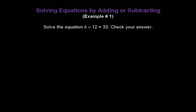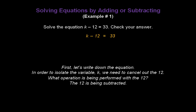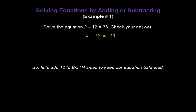Let's solve this equation: k minus 12 equals 33, and check our answer. First, write down the equation k minus 12 equals 33. In order to isolate the variable k, we need to cancel out the 12. The 12 is being subtracted, so to remove it from that side, we perform the opposite or inverse operation using 12, which is addition. Let's add 12 to both sides to keep our equation balanced — plus 12 on the left and plus 12 on the right. The 12 is now cancelled out on the left because a negative 12 plus 12 gives us 0.